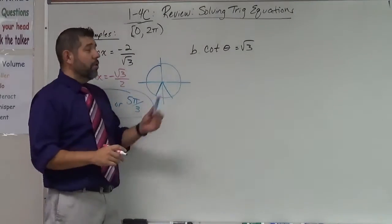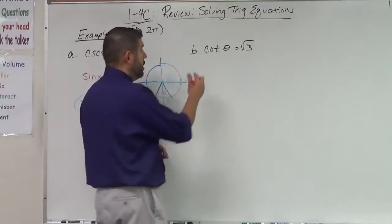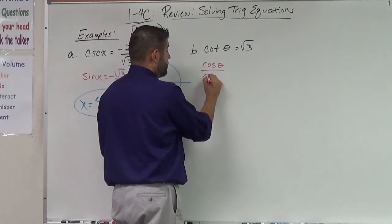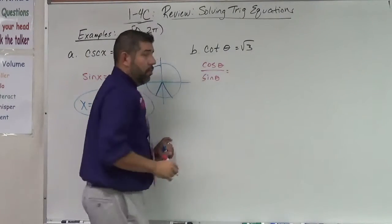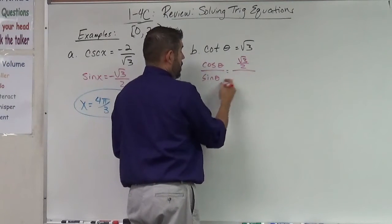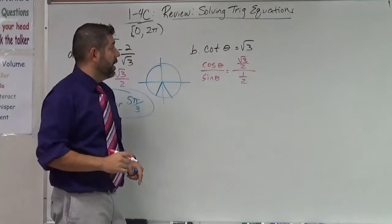So what about this one? Cotangent theta equals root three. Well remember that cotangent is the cosine root three over the sine. So we're really looking at where is the cosine root three over two and where is the sine one half. So that when we cancel those out, we get root three.